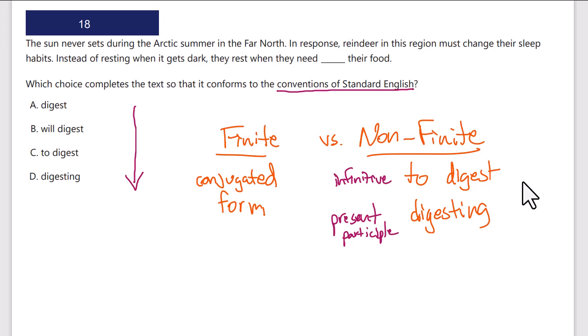Let's take a look here. If I do my vertical scan, in this case I see there are actually two non-finite options: 'to digest' and 'digesting.' These are the infinitive and the present participle respectively. 'Digest' and 'will digest' are finite. Right away I'm looking for finite versus non-finite. If I see a lot of non-finite options, two or more, I'm probably going to approach this as a finite/non-finite option, not necessarily verb tense or number.